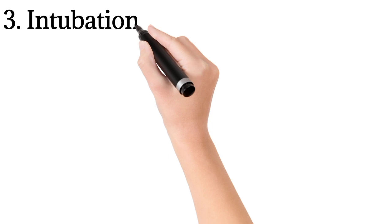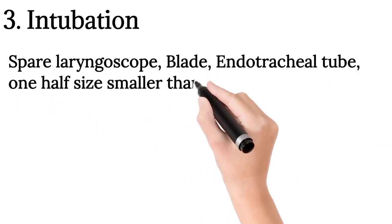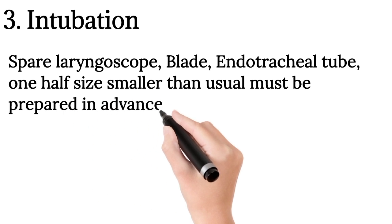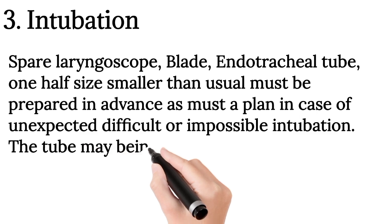Intubation: Spare laryngoscope, blade, and endotracheal tube one half size smaller than usual must be prepared as there must be a plan in case of unexpected difficult or impossible intubation. The tube may be fitted with a stylet.